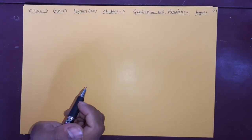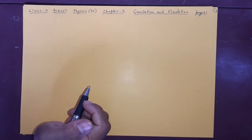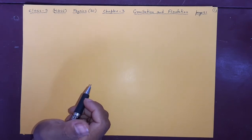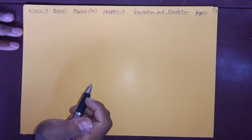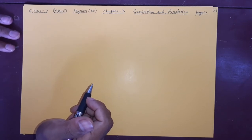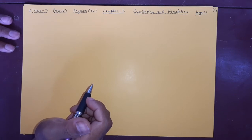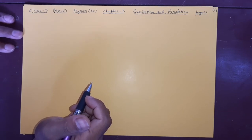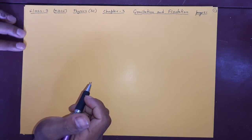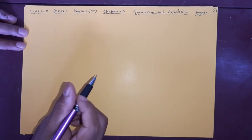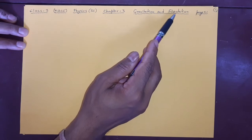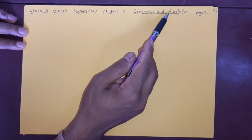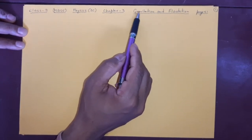Welcome to the SD Online Classes. This is for Class 9, Board of School Education, Physics Chapter 3. We have finished Chapter 2 in the whiteboard classes — that was the Force chapter. Now we are starting Gravitation and Flotation. This chapter has two parts: first, Gravitation, and then Flotation separately. In Flotation we will study pressure and Archimedes' principle.